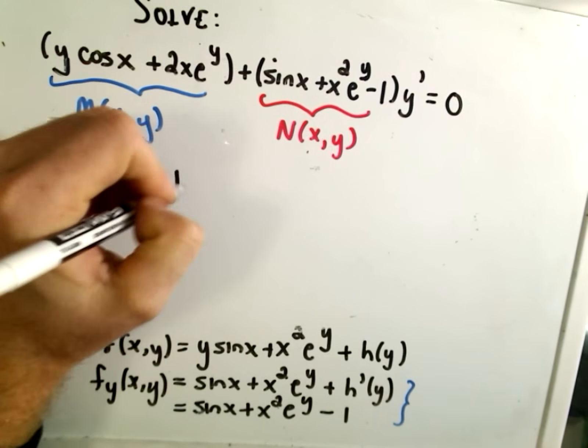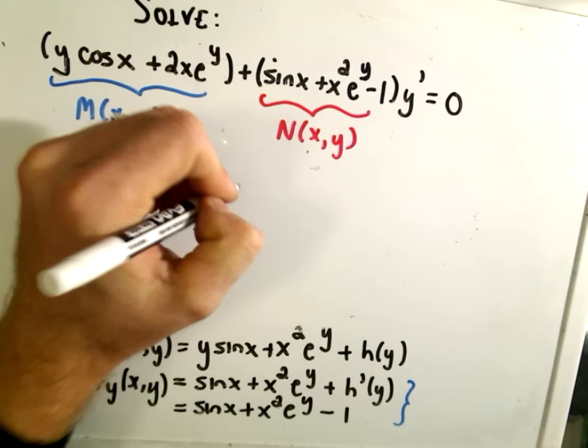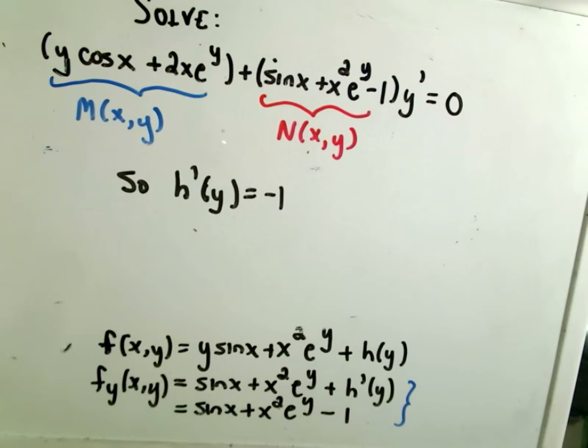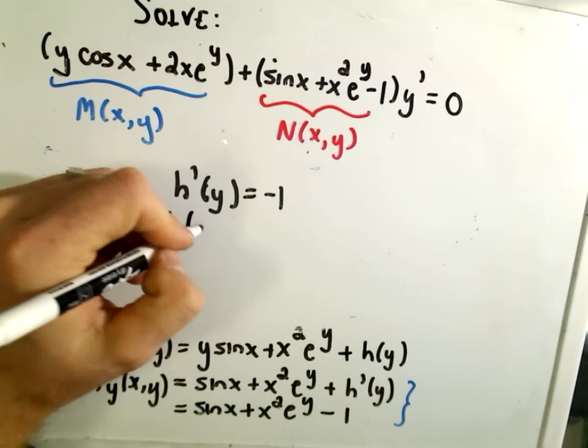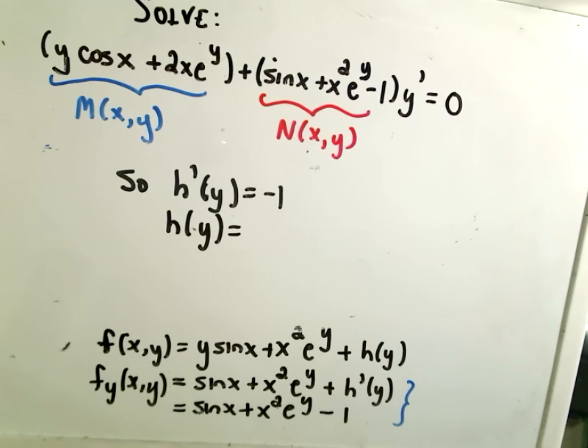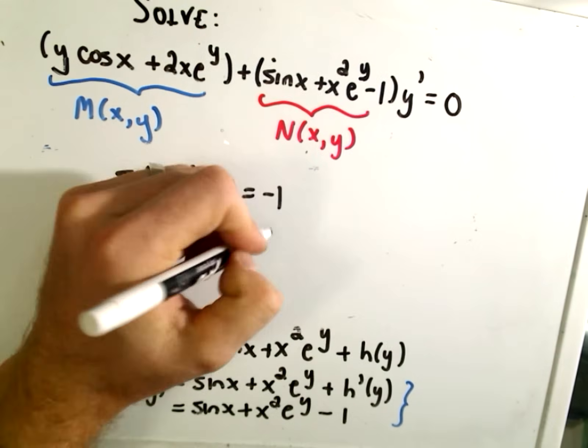So now we know that h prime of y simply equals negative 1. And if we integrate that, we'll get that h of y. And again, so now we would integrate back with respect to y. We would get that h of y is just negative y.